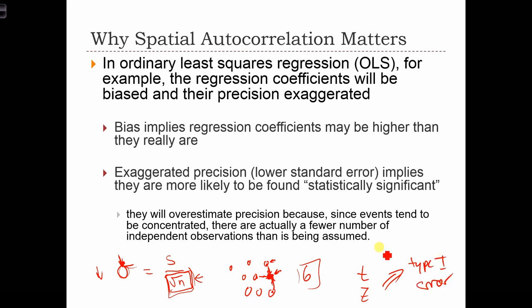Say we have our T distribution and a critical value. In reality, our T-score might fall on this side of the critical value — that's what our T-score would be if we used the correct number of samples in our standard error. But if we incorrectly use 9 instead of 6, that's going to make our T-score higher, and there's a chance it's going to push our T-score into the critical region. In which case, we're going to reject the null hypothesis when, in reality, we shouldn't have.